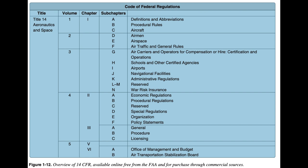For instance, 14 CFR Part 61 pertains to the certification of pilots, flight instructors, and ground instructors. It also defines the eligibility, aeronautical knowledge, and flight proficiency, as well as training and testing requirements for each type of pilot certificate issued. 14 CFR Part 91 provides guidance in the areas of general flight rules, visual flight rules (VFR), and instrument flight rules (IFR). While 14 CFR Part 43 covers aircraft maintenance, preventive maintenance, rebuilding, and alterations.